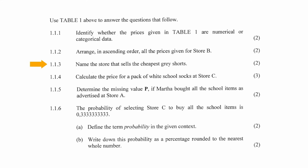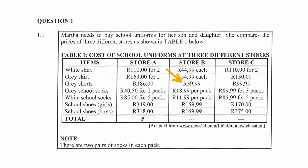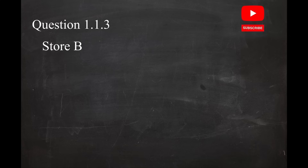In question 1.1.3, you have to give the name of the store that sells the cheapest grey shorts. From the table, the store that sells the cheapest grey shorts is Store B.